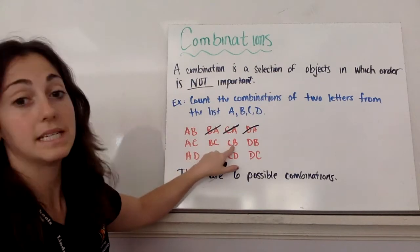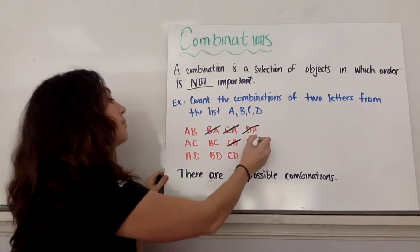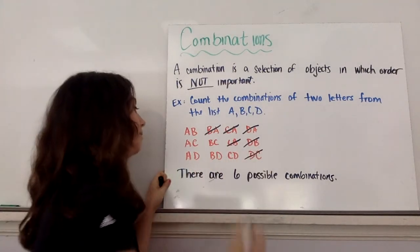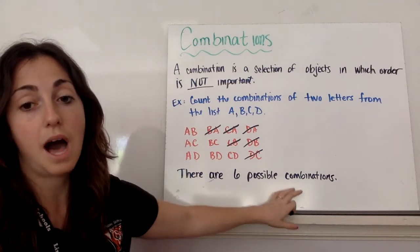Now B, C and C, B, same thing. Cross that one off. B, D and D, B, same thing. And lastly, C, D and D, C, same thing. So then there are six possible combinations.